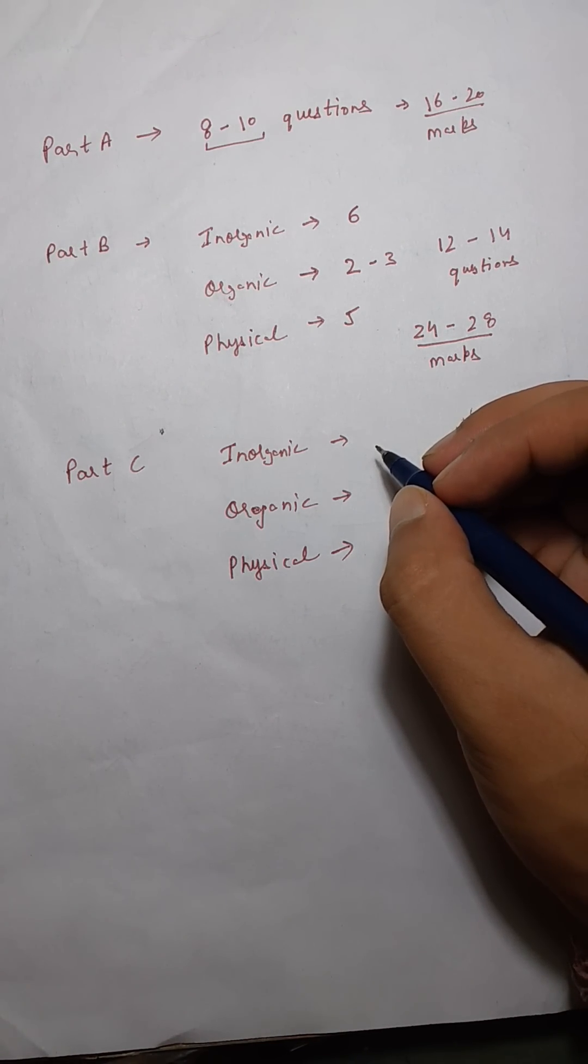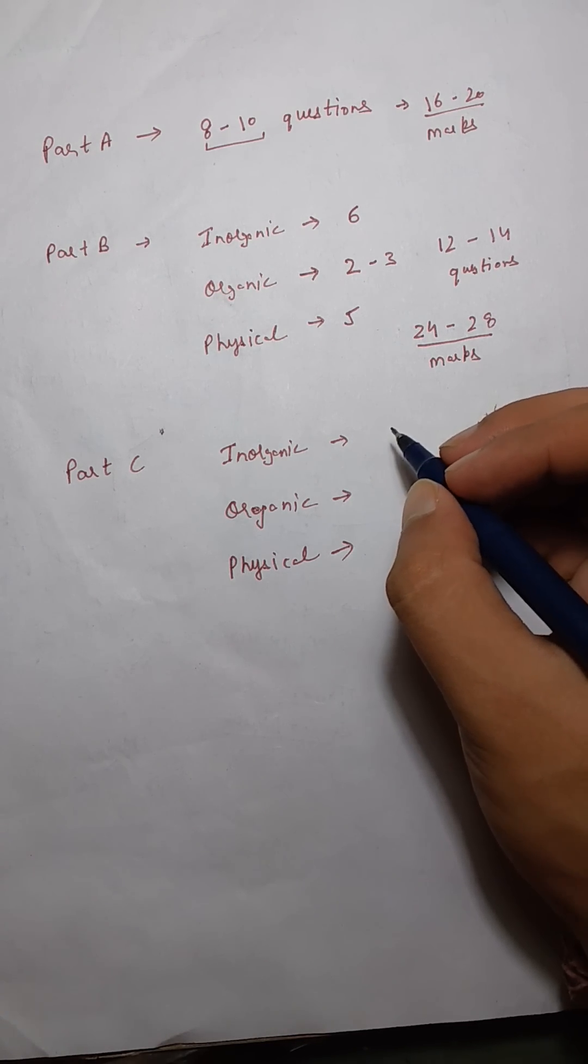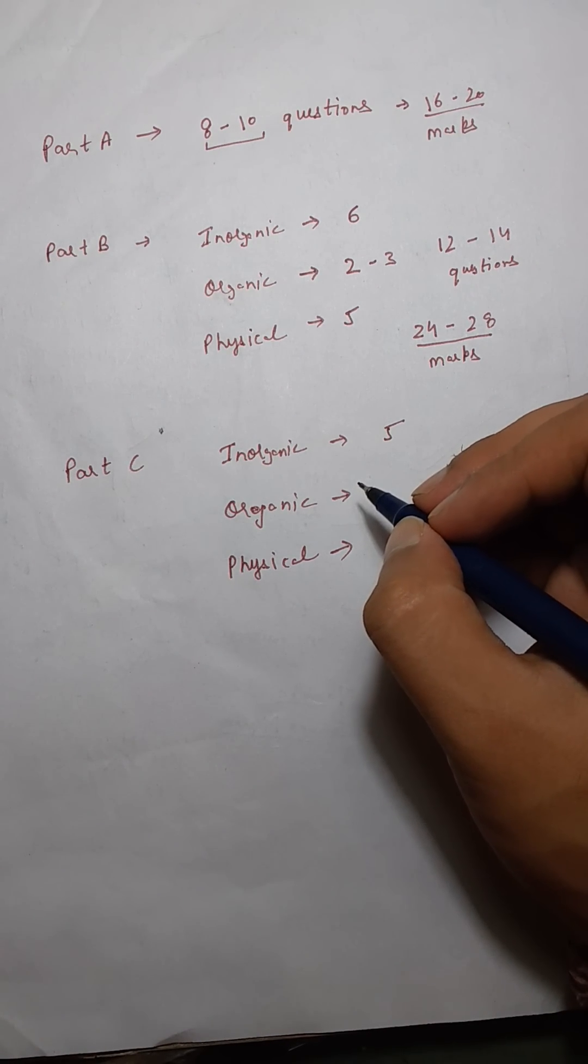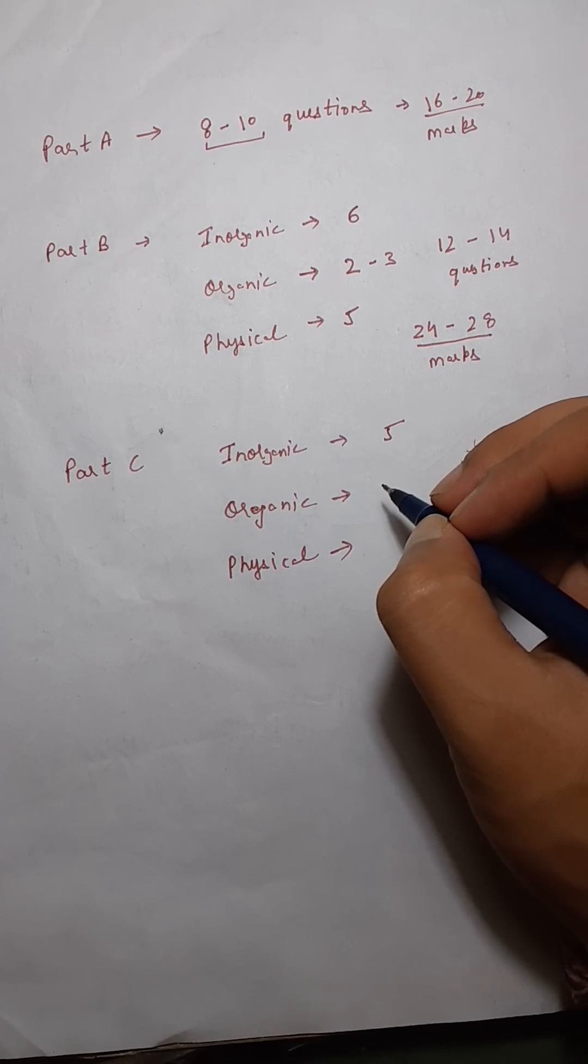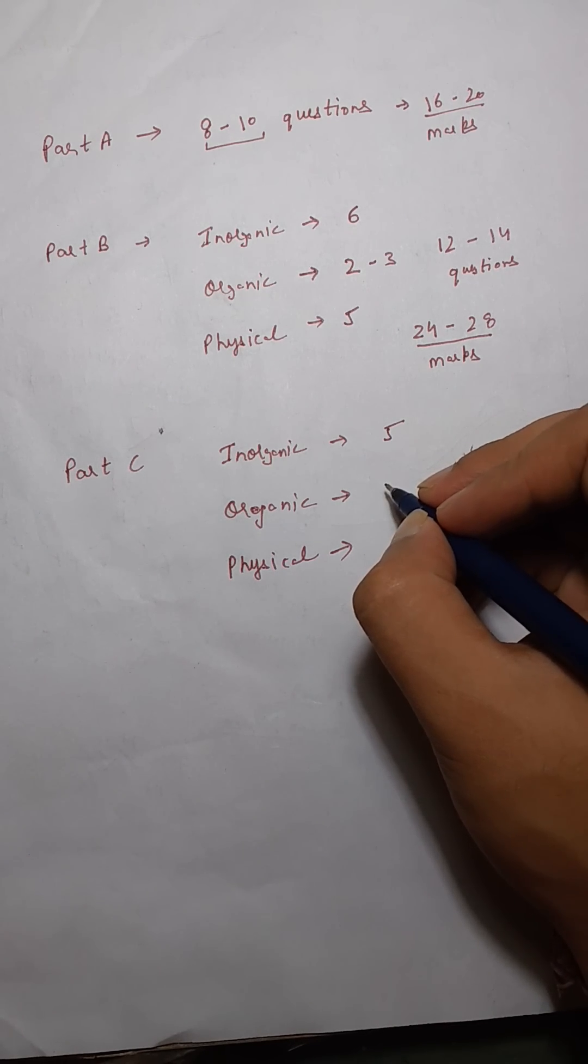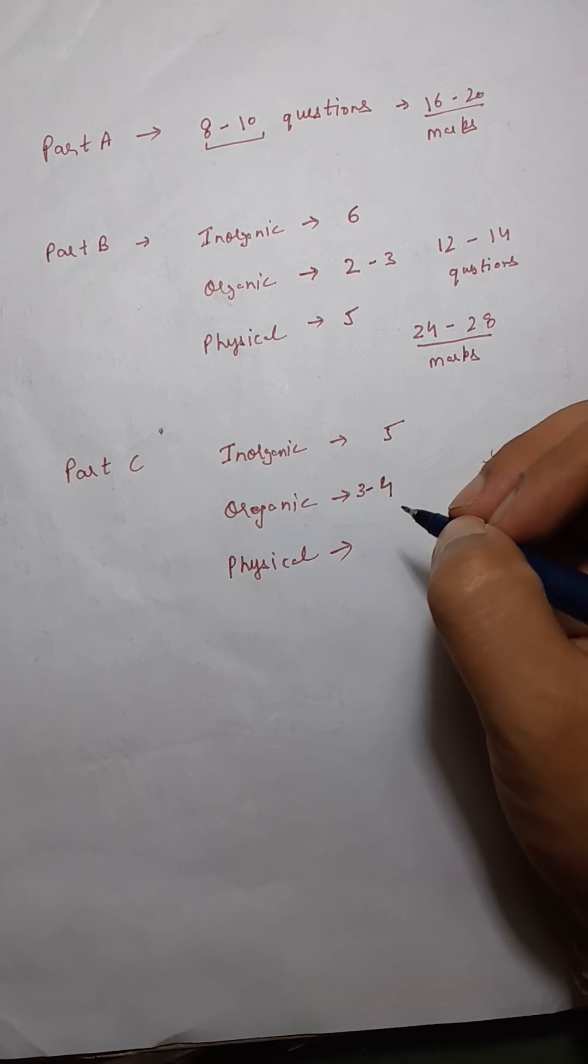And one question you can say was on organometallics which many students got correct. It was a 50 percent question like 50 percent aspirants got it correct 50 percent got incorrect. So let's just say five questions for inorganic. Coming on to organic. Organic part C was actually simpler than part B. So there was one easy question from NMR. Then there was one question on the DNA where it was asked I think uracil is present in which DNA RNA or what. So that was a pretty easy question. So two questions from organic. Then there was one question on specific rotation again from organic. So three questions were very very direct and simple and one who has a strong organic could do at least minimum to minimum four questions. Three questions can be done by a person who's average in organic. So three to four questions in organic.